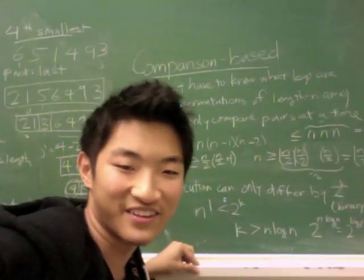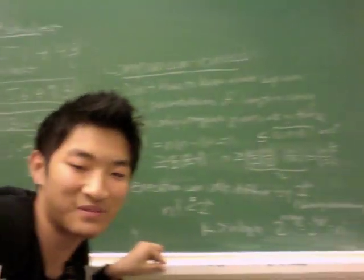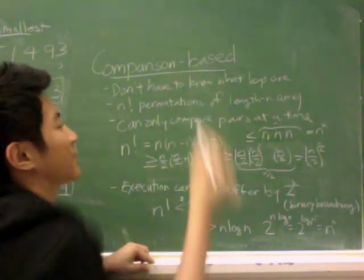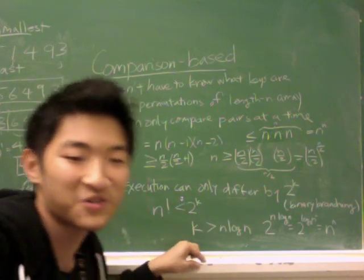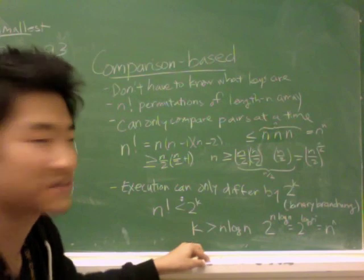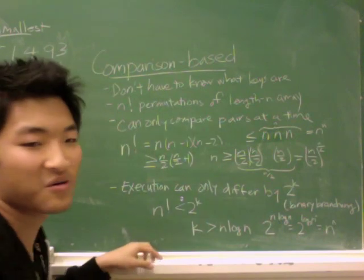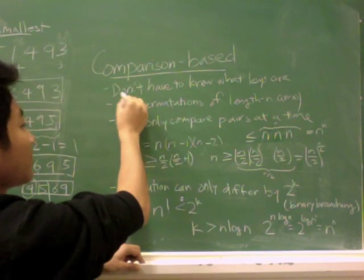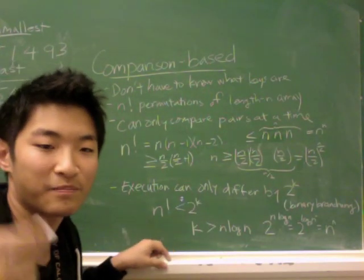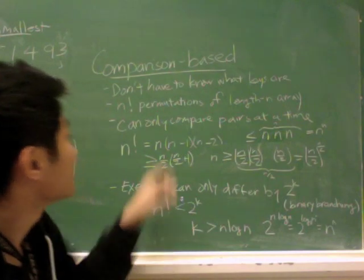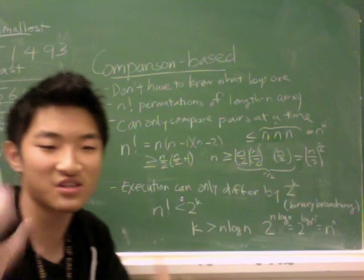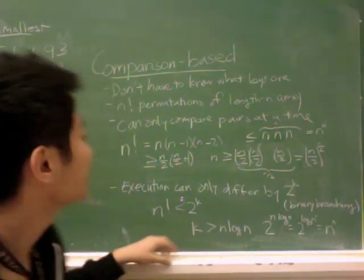Finally, I have very little time left to talk about this, but this is a very simple argument. So we want to find a lower bound for comparison-based sorting because we realize that merge sort and quick sort all have n log n average to worst case time. And so we want to know why. One difference between comparison-based sort and bucket sort and radix sort is that we don't have to know what the keys are like for comparison-based sorting. All we have to do is compare each pair.